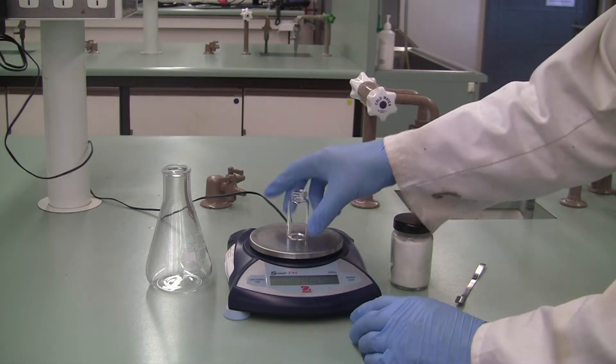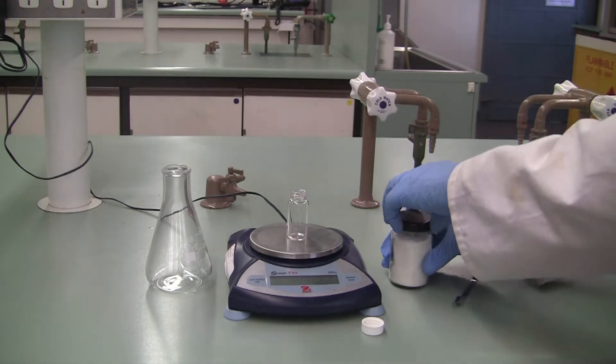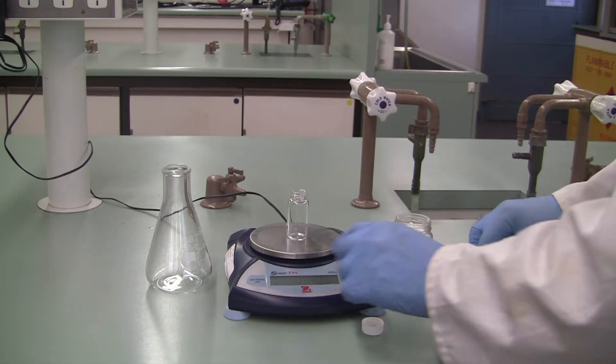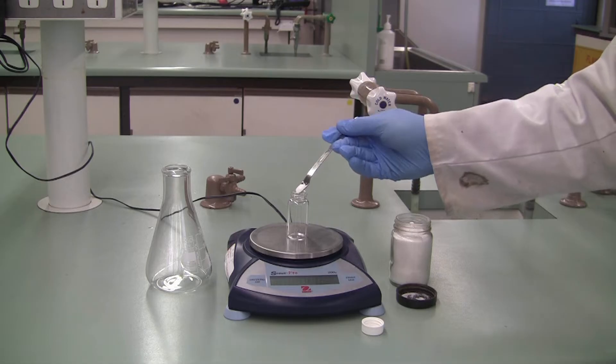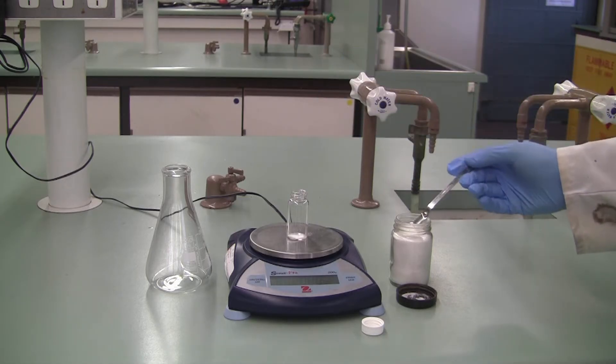Take the lid off and place it on the top loading balance. Get your solid ready, zero the balance with your vial on, and weigh in the approximate mass you need. Here I need about 0.2 to 0.3 grams.